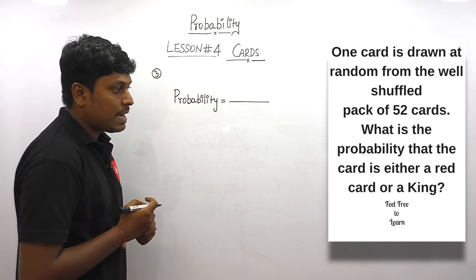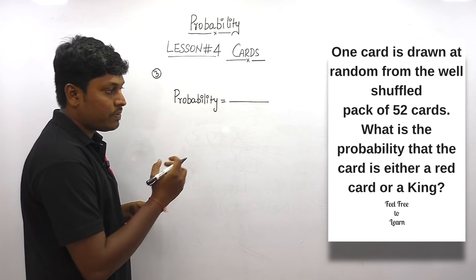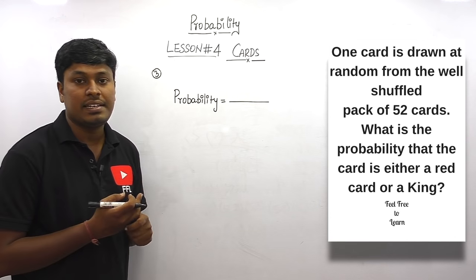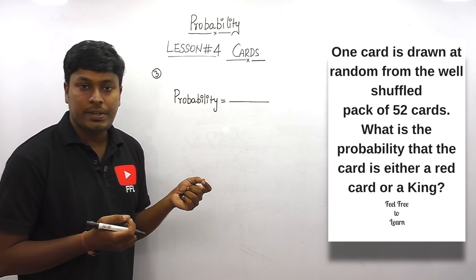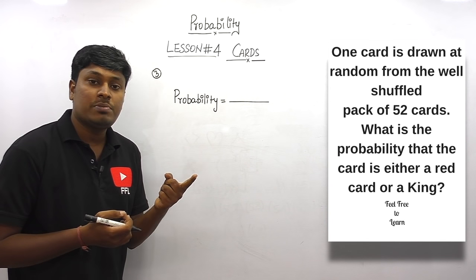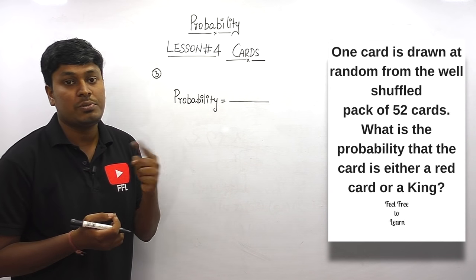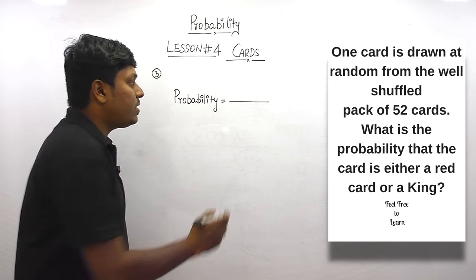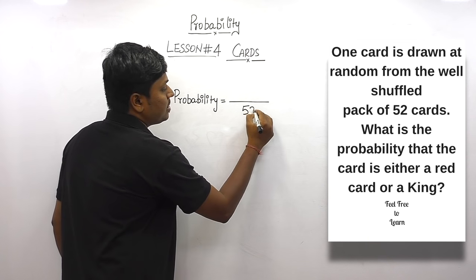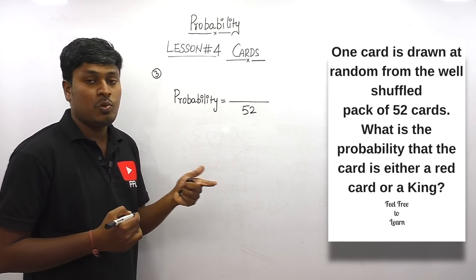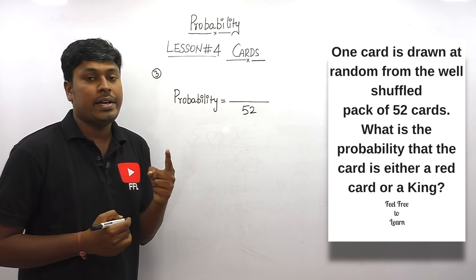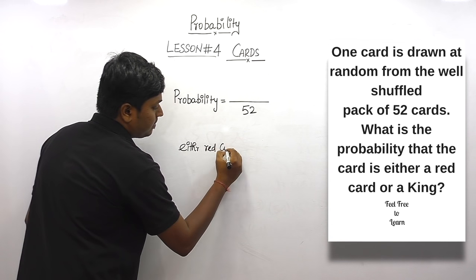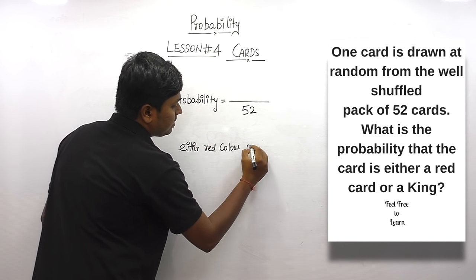Question number three: one card is drawn at random from a well-shuffled pack of 52 cards. What is the probability that the card is either a red card or a king? This is a most important concept. Out of 52 cards, our target is to pick one card that should be either red color or a king. Total possibility is 52.